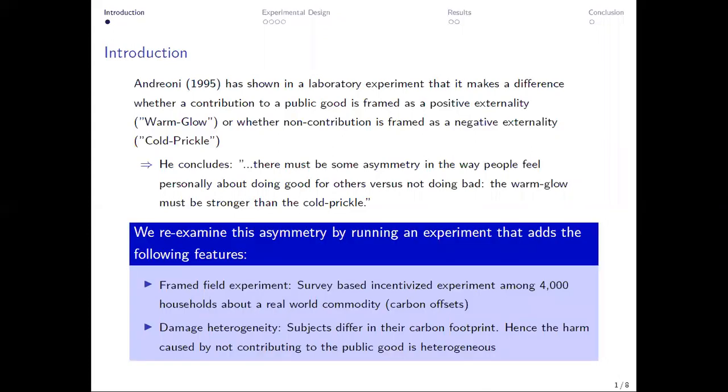And we re-examine this asymmetry by running an experiment that adds two new features. First, it's a framed-field experiment, so it's a survey-based incentivized experiment among 4,000 households about a real-world commodity, carbon offsets in our case.